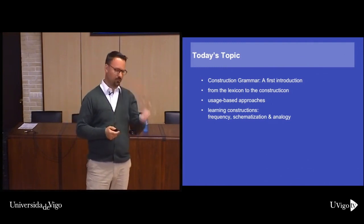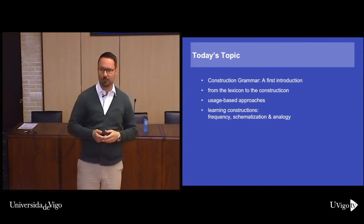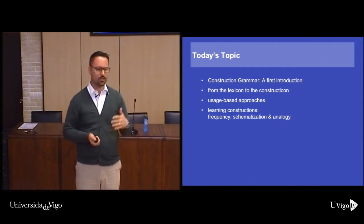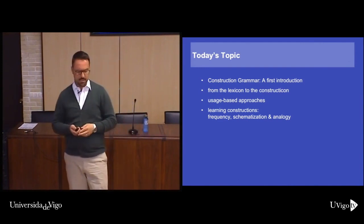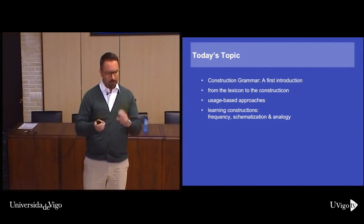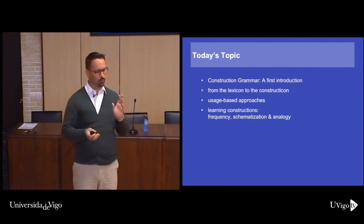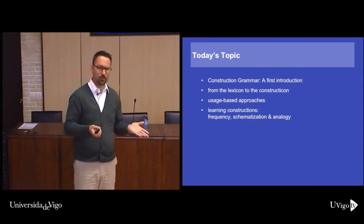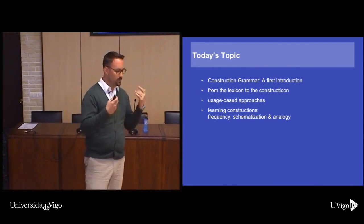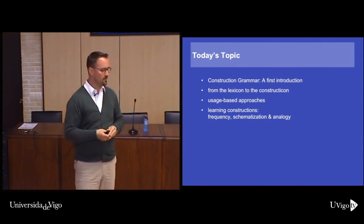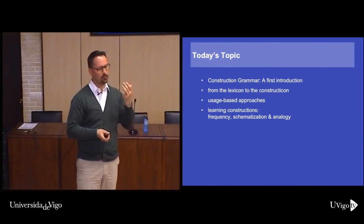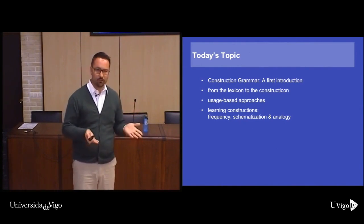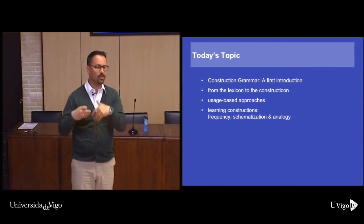We're going to talk about how constructions can be learned — how people learn them based on input frequency, as well as domain-general cognitive processes like analogy, schematisation, and generalisation. One of the big things in usage-based construction grammar is that you assume there are independent principles which shape your grammar, but these are not language-specific like a language module; they depend on general cognitive skills, because we generalise scenes and situations. Construction grammarians argue this is a simpler model than assuming language needs extra mechanisms.